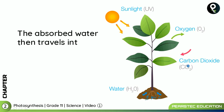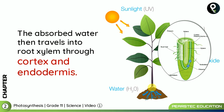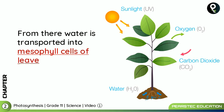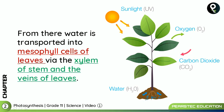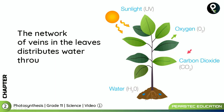The absorbed water then travels into the root xylem through the cortex and endodermis. From there, water is transported into the mesophyll cells of the leaves via the xylem of the stem and the veins of the leaves. The network of veins in the leaves distributes water evenly throughout the leaf.